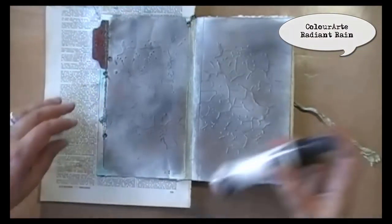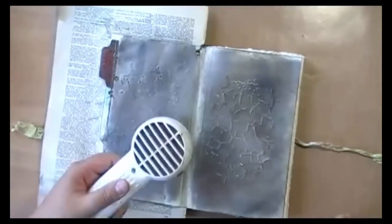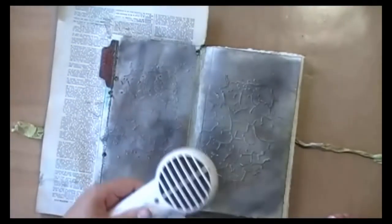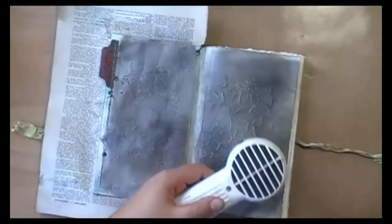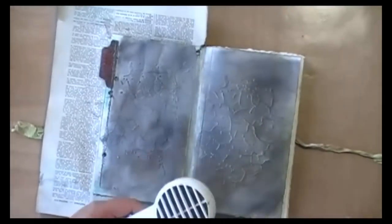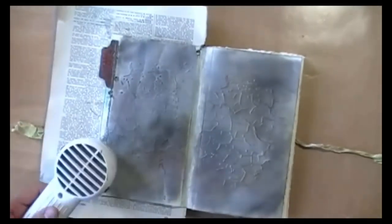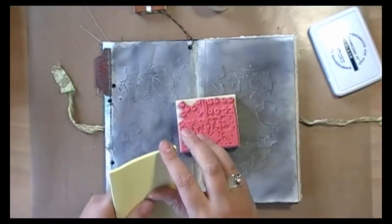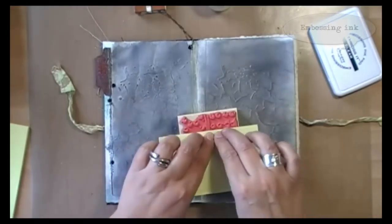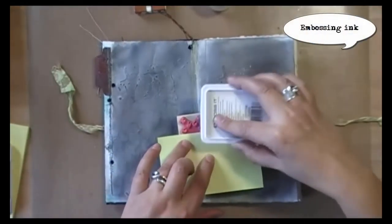Now on top of my Pan Pastel, I need some fixative. And as I'm too lazy to go outside, I'm using ColorArt's Radiant Rain. And this is the, let me check, this is one of the pearl versions. So no color, just a bit of bling, and it will act as a fixative.